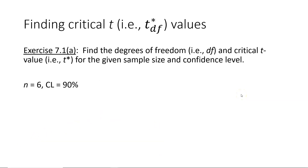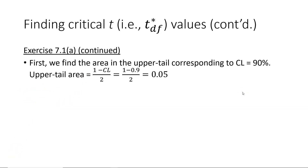Now I want to show a couple of examples of how to find critical t, that is t asterisk values, using our guru. The first example is from exercise 7.1 part a. I want to find the degrees of freedom and the critical t value for a sample size of 6 and a confidence level of 90 percent. As we did when finding critical z asterisk values in chapters 5 and 6, I first need to find the area in the upper tail, which gives an upper tail area of 0.05.